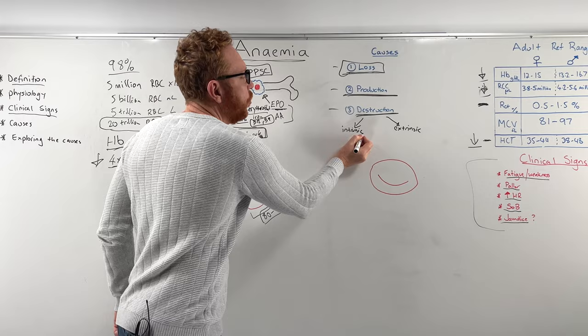Or there could be a problem with the stem cell itself. Certain cancers like leukemias can cause malignancies to develop within the stem cells, so the overall number of healthy stem cells gets crowded out and reduces in number. Therefore the overall production process drops and we develop a production-caused anemia, but the red blood cells that are produced are still normal.